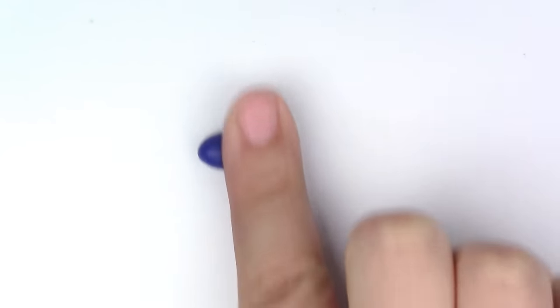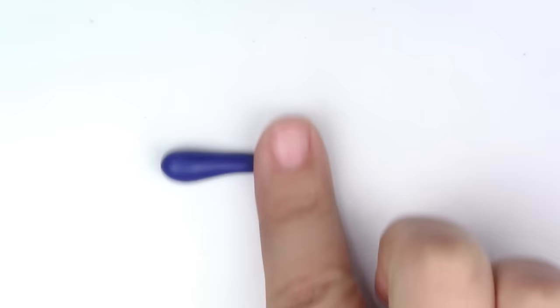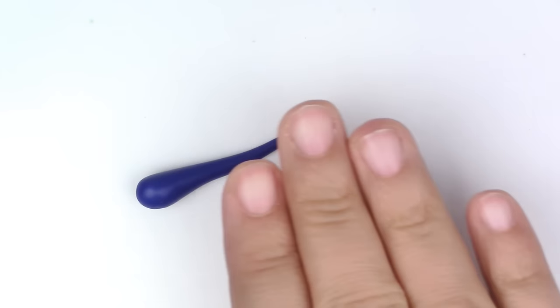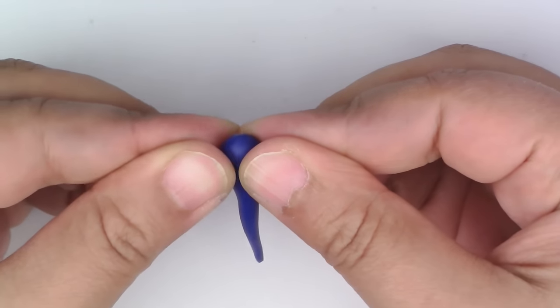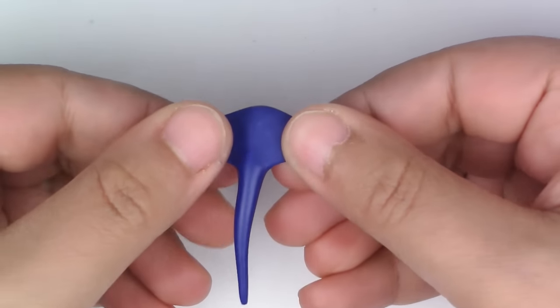To make the stingray, it's quite simple. Make a long teardrop shape with the color of choice. Mine is blue like the ones in the movie. Now you're going to pinch each side of the bubbly part until you have what looks like wings.